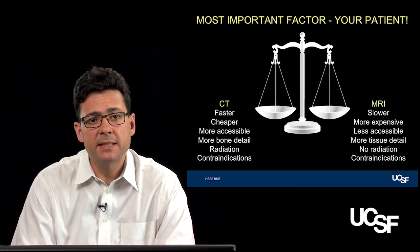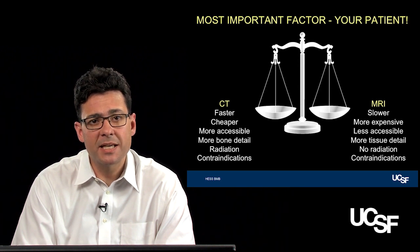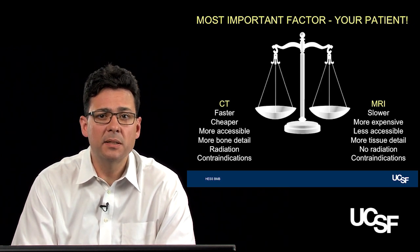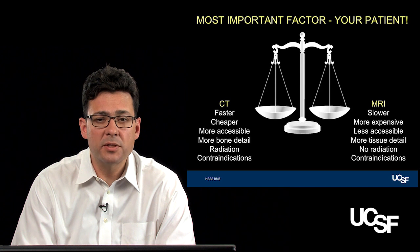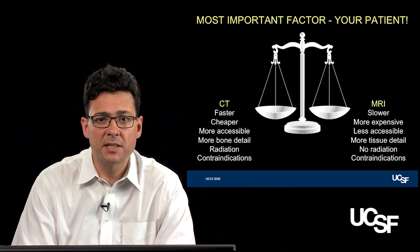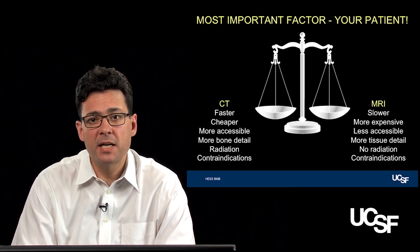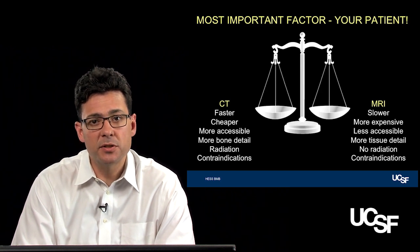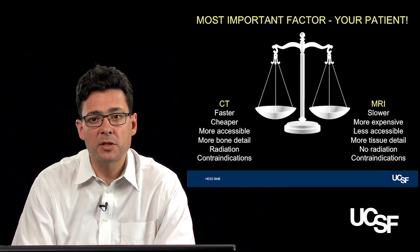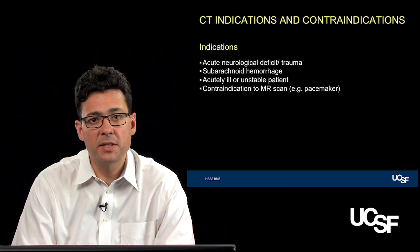On the downside of CT, it does incur a radiation dose, although the dose is small. Certain patients can't undergo CT for the desired reason. On the MRI side, MRI is slower — the patient has to lie in the scanner for 30 to 45 minutes — and it's more expensive and less accessible. But on the upside, it provides a lot of tissue detail that you simply can't see with CT. There is no ionizing radiation dose, but there are contraindications with MRI as well that you have to bear in mind.